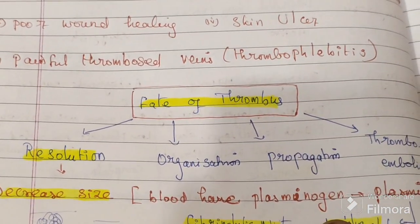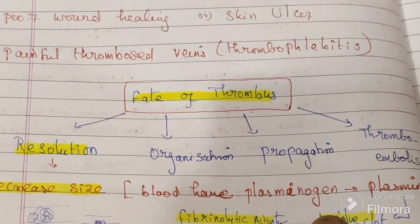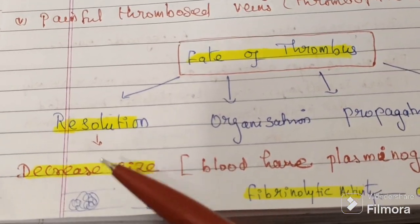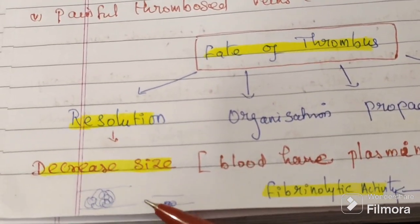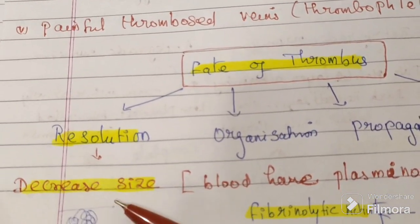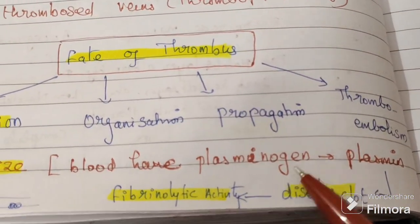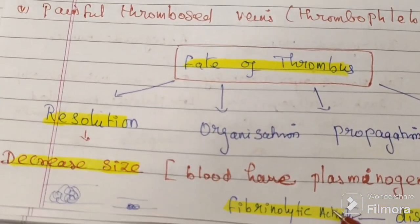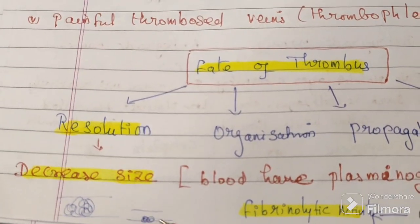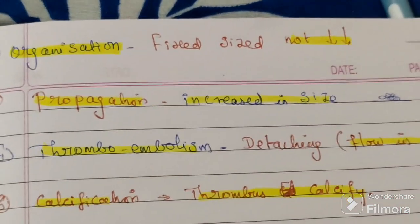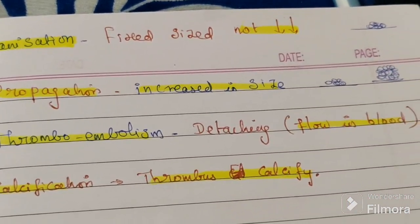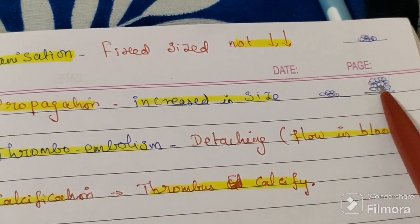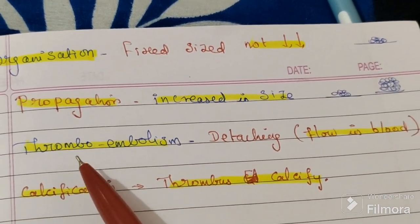The fate of a thrombus involves four major outcomes: first is resolution, second is organization, third is propagation, and fourth is thromboembolism. Resolution: the thrombus decreases in size. Blood contains plasminogen, which is activated to plasmin, and because of fibrinolytic activity, a lysis process occurs — so the thrombus reduces in size. Organization: the thrombus remains a fixed size, not reducing. Propagation: the thrombus increases in size beyond its original size.